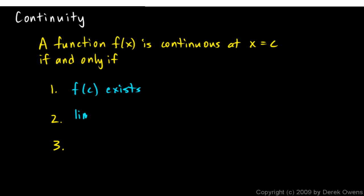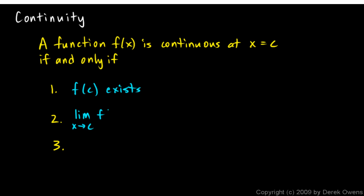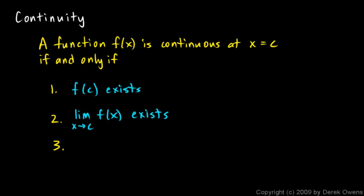The second condition is that the limit as x approaches c of f must also exist. So the function has to not only exist at a point, it has to have a limit at that point, which means the left and right limits have to both exist and be equal. Third, the limit of the function at that point must equal the value of the function at that point: the limit as x approaches c of f(x) equals f(c). A function is continuous only if the function exists, the limit exists, and the limit equals the value.